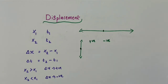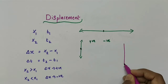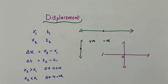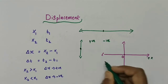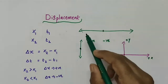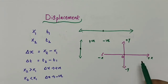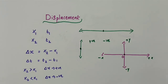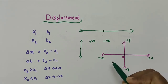For example, considering the Cartesian coordinate system: we take the origin, with positive x-axis, negative x-axis, positive y-axis, and negative y-axis. If the object starts from the origin and moves forward — along the positive x direction — the direction is specified by a positive sign. If the object moves backward — along the negative x direction — the direction is specified by a negative sign.